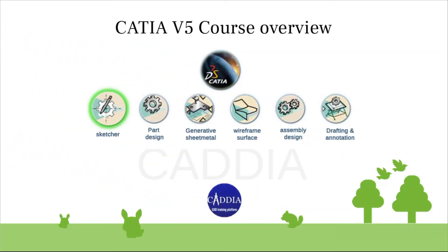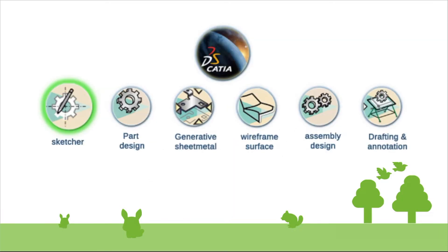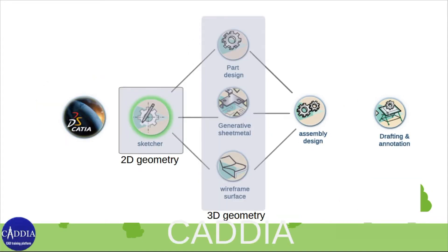In this video I will talk about the course overview of CATIA V5. In this course I have included 6 modules that are very important for the design and manufacturing industry. These industry-specific modules will help you to get a good job in design and manufacturing. Let's take a look at these 6 modules.